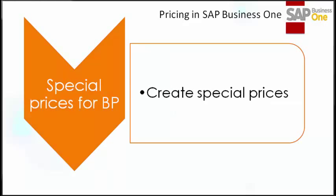The last type is special prices for business partners. Sometimes you may want to give an even better deal to your favorite customers. You can base your discount on any price list or simply enter them manually. You can define discounts by date range, quantities, and units of measure. A special price defined for a business partner overrides all other prices — this is the highest priority given to any price list. However, the unit of measure defined in the special price must match the unit of measure specified in the row for the discount to apply.